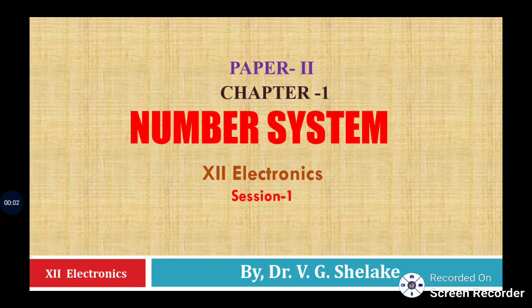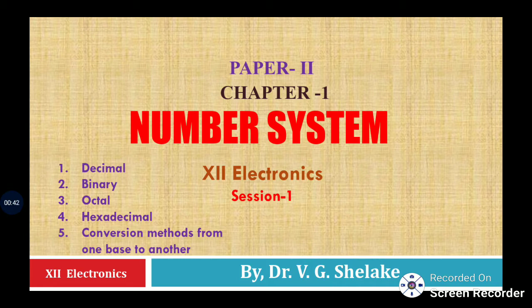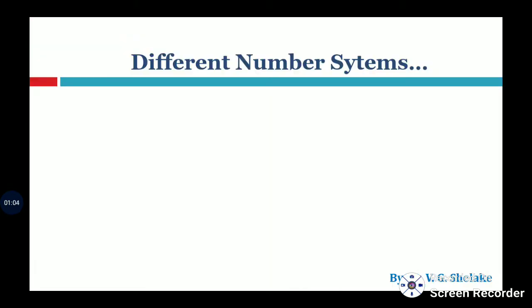Hello students, today we are going to discuss chapter number one from paper number two: number systems. This topic is very easy and you can get maximum marks in the board examination. We are going to discuss different types of number systems and conversion from one number system to another, including decimal, binary, octal, and hexadecimal, along with various conversion methods.